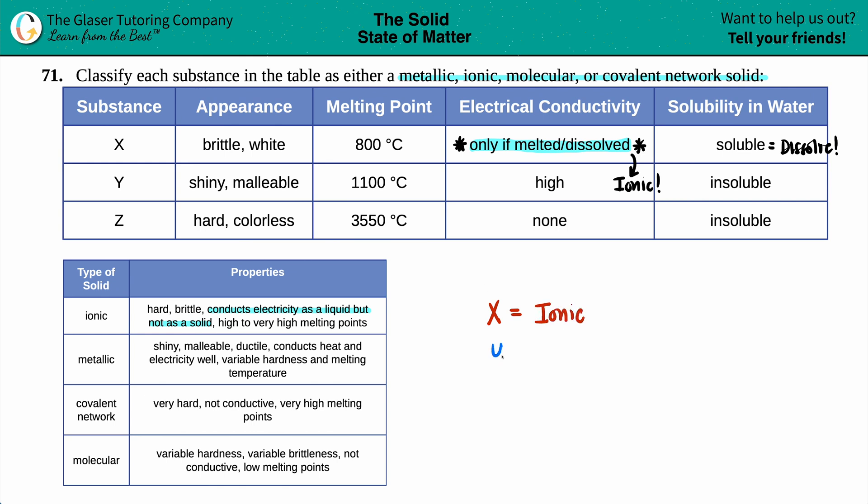Now let's go to substance Y. So substance Y, shiny, malleable. Ooh, shiny stuff tells me that this is a metal. So I'm looking at metals. So I'm either down to the two types of solids that have metals in it. And the two types of solids that have metals in it is ionic or metallic.